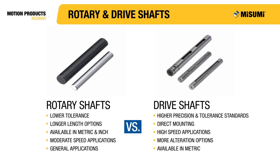Rotary shafts are usually sufficient for general applications and are the more popular option. Rotary shaft tolerances are slightly lower compared to drive shafts, making drive shafts more suitable for higher speed and higher accuracy applications. Many customers prefer the drive shaft option for more critical applications, such as direct mounting to a drive source. Drive shafts also offer many additional machining alterations not offered on the rotary shaft lineup. However, rotary shafts are available in longer lengths and inch sizes.